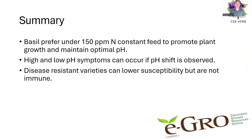In summary, basil for spring transplant prefers under 150 parts per million constant feed to promote plant growth and maintain optimal pH without internode stretch. High and low pH symptoms can occur if that shift happens, so monitoring your crop using a pour-through is very important. Disease-resistant varieties can lower your susceptibility, but they're not immune to downy mildew. With that, I'd like to thank everyone for attending today.